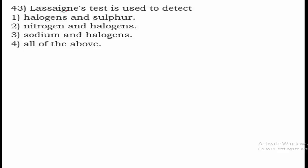Question 43: Lassaigne's test is used to detect what? It is used to detect the presence of halogens, sulfur, nitrogen, and also sodium. Therefore all of the above are correct, and option 4 — all of the above — is the right answer.